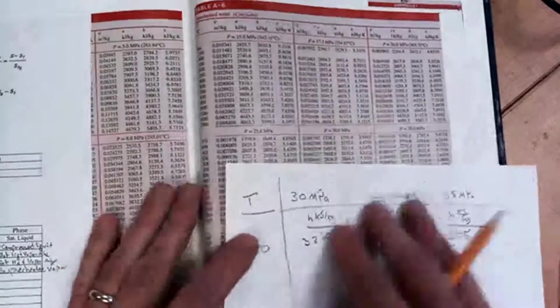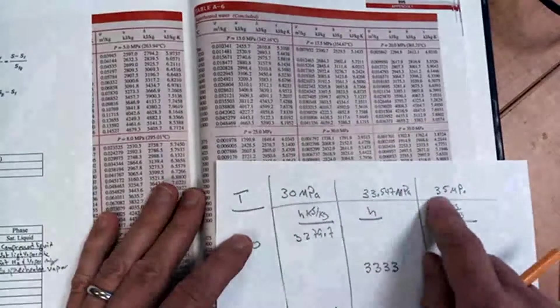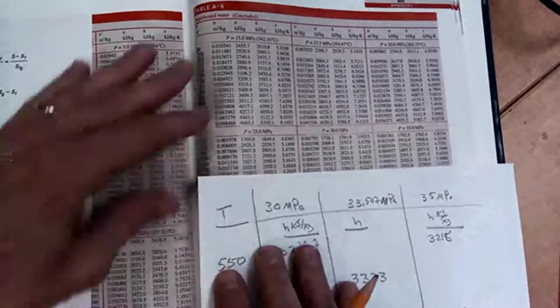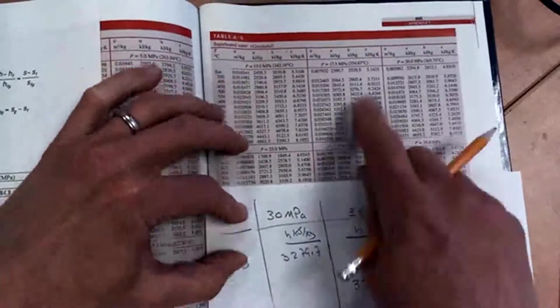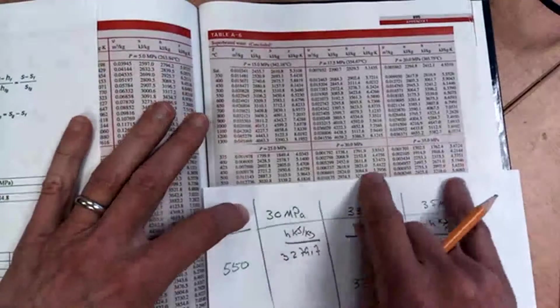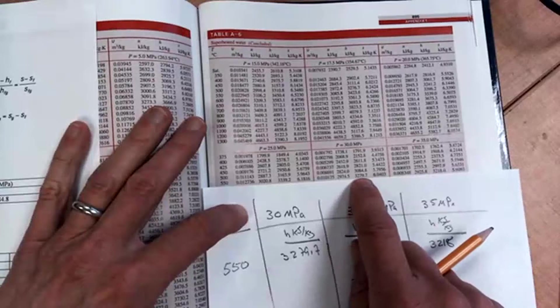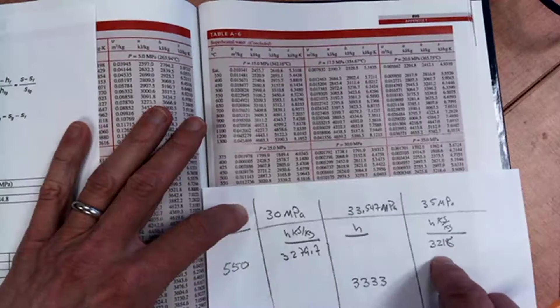So let me show you what I've done here. You can see I'm kind of making my own charts. Here's a 30 megapascal section. Here's a 35 megapascal section. And I go from 550 Celsius, and I just simply copy the H values for 30 and 35 in for that line 550. So here I got 3,279.7, 3,218. Put that there.